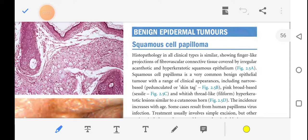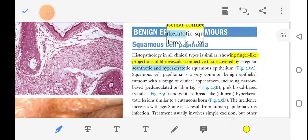So let's talk about the squamous cell papilloma. Histopathology in all clinical types is similar and it shows finger-like projections of fibrovascular connective tissue which is covered by irregular acanthotic and hyperkeratotic squamous epithelium.